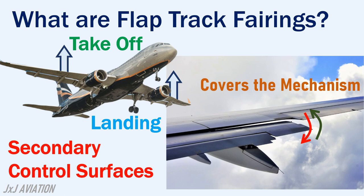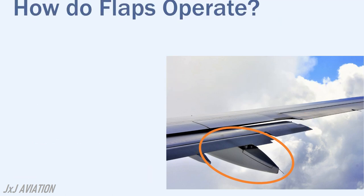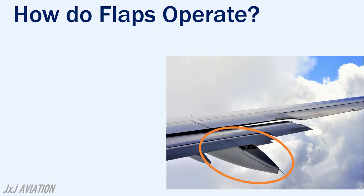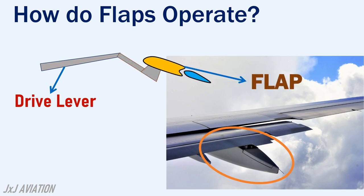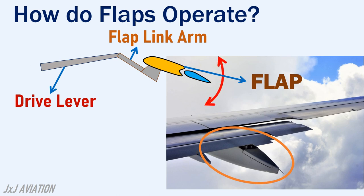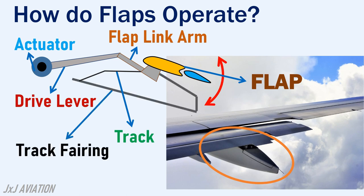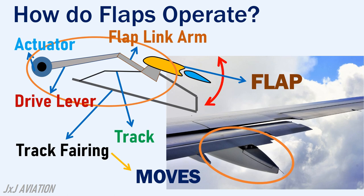Now let's look at how the flap operation takes place to understand what is inside these fairings. The flaps are operated by a drive lever which is connected to the flaps using a flap link arm. The link arm is responsible for the extension and retraction of the flaps using an actuator. At the bottom of the flap there is a track which operates the movable track fairing, so as the flap extends or retracts the flap track fairing moves accordingly to cover the flap operating mechanism.